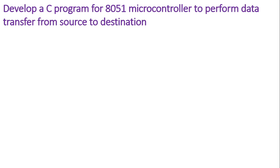In this video lecture, I will demonstrate how to develop a C program for the 8051 microcontroller to perform data transfer from source to destination. Some data would be stored in source memory locations, and that block of data is to be transferred or copied from those source locations into destination locations. This program is also called a block transfer program.